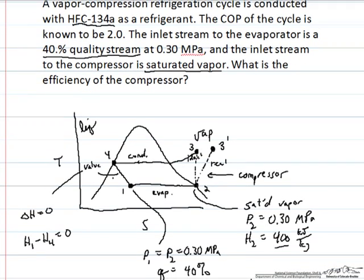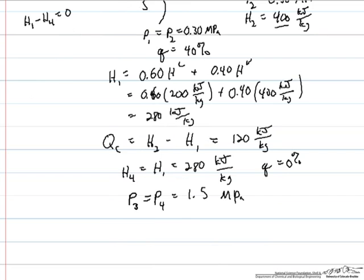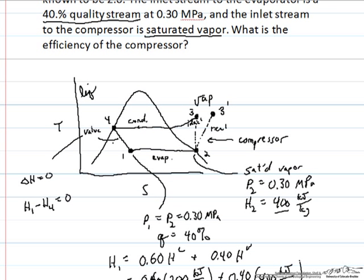That's not enough to fully specify stream 3, because stream 3 is a superheated vapor; it's no longer in the two-phase region. So we have two degrees of freedom that we need to specify based on the Gibbs phase rule, and so we need to know something else about that stream. What we typically do is first assume that the compressor operates in a reversible manner, and therefore the entropy change in going from 2 to 3 is equal to 0, and then we'll correct for that in terms of the efficiency of the compressor to describe the behavior of a real compressor.